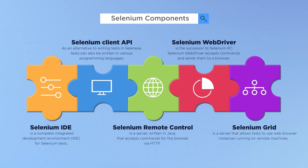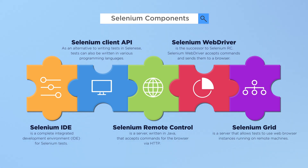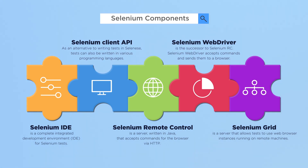The final component we will consider today is Selenium Grid. It is a server that allows tests to use web browser instances running on remote machines. With Selenium Grid, one server acts as a central hub. Tests contact the hub to obtain access to browser instances. The hub has a list of servers that provide access to browser instances, called WebDriver nodes. Selenium Grid allows running tests in parallel on multiple machines and managing different browser versions and configurations centrally, instead of in each individual test.